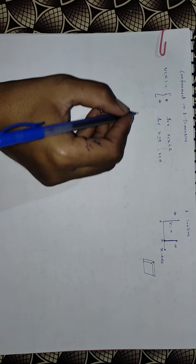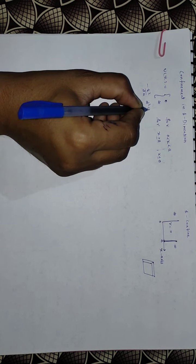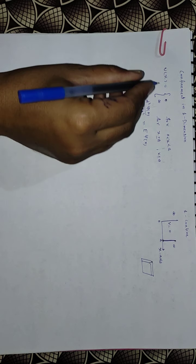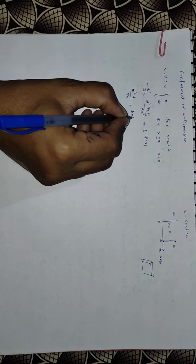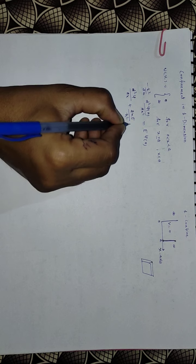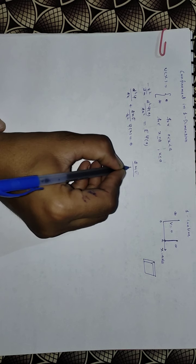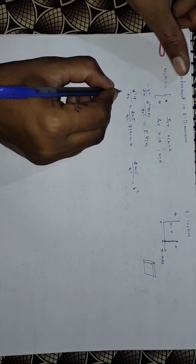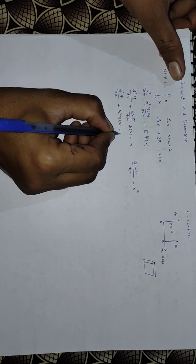So the Schrödinger equation will be: −(ℏ²/2m)(d²ψ(x)/dx²) = E·ψ. Because V is 0 inside the box, after rearranging we can write (d²ψ/dx²) + (2mE/ℏ²)ψ(x) = 0. We define k² = 2mE/ℏ², so the equation becomes d²ψ/dx² + k²ψ(x) = 0.